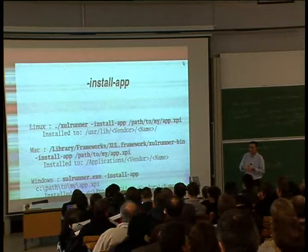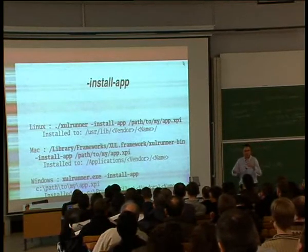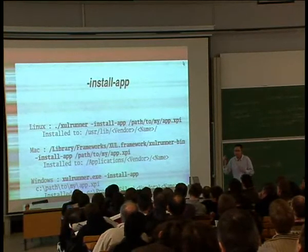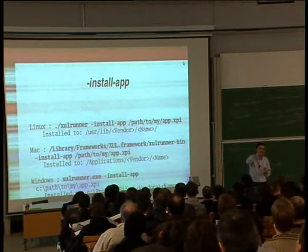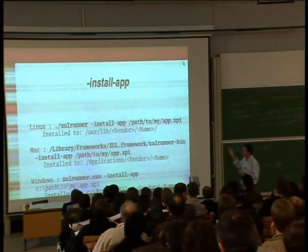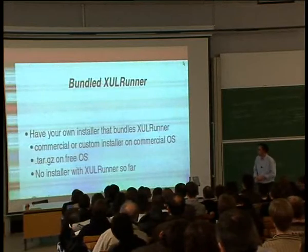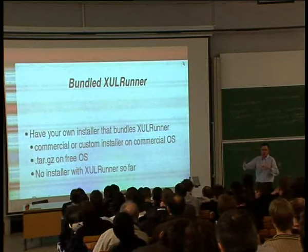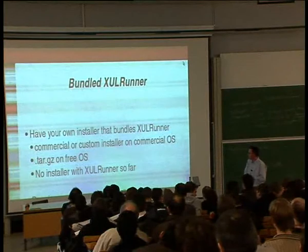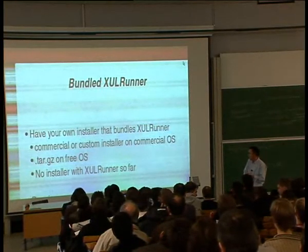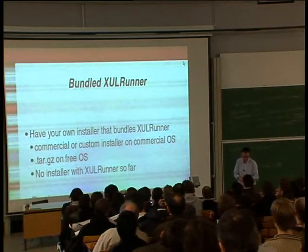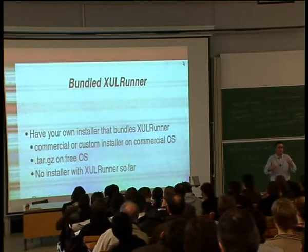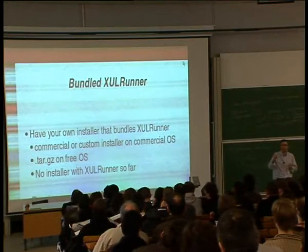That install-app command unpacks the application and installs it to system locations. On Linux it installs to /usr/lib/vendor/name — those vendor and name values come from your application.ini file. Or you can bundle your own XULRunner: have a native platform installer, a compressed archive, or a commercial/custom installer containing both the XULRunner files and your application. You might do this if you've made core changes, applied patches, or are bundling third-party libraries. The Songbird media player does this.